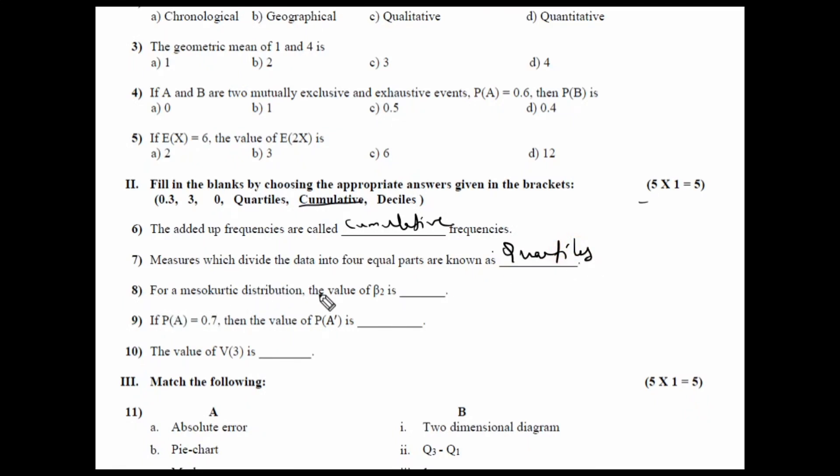For a mesocurtic distribution, the value of beta 2 is - so, for a mesocurtic distribution, mesocurtic means the curve is neither too peaked nor it is too flat. So, it is equal to 3.